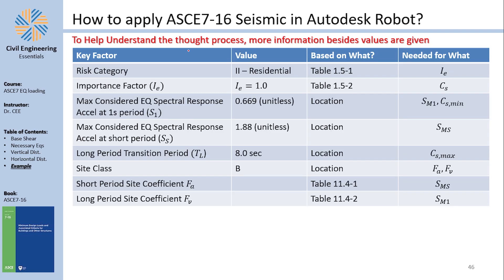Everything mentioned here is explained in earlier videos — I'm helping you understand each coefficient: where it comes from and where it leads. For the risk category I assumed Risk Category II for a residential building, based on Table 1.5-1. I asked viewers previously to comment whether it should be II or III. The risk category is needed for many things, most importantly the importance factor Ie.